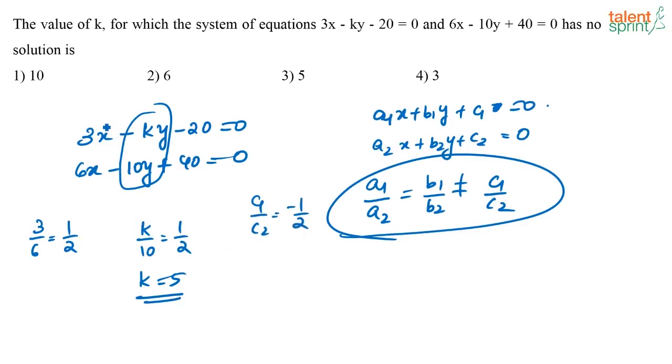Both are 1/2. A1/A2 equals B1/B2. This equals 1/2 and this equals minus 1/2. So they are not equal. So then the system of equations will not have any solution.